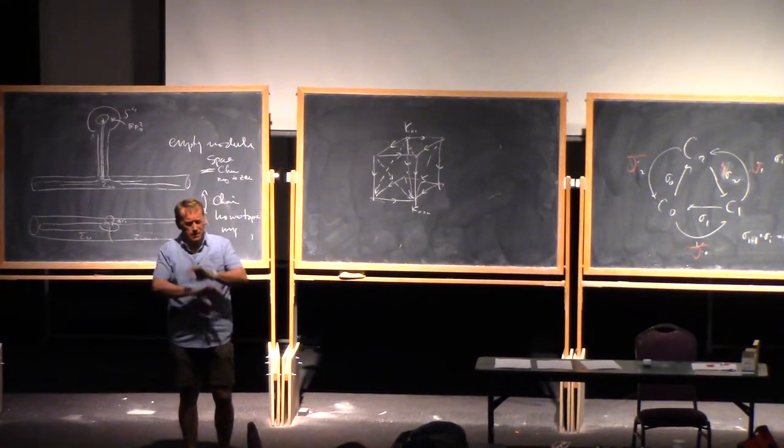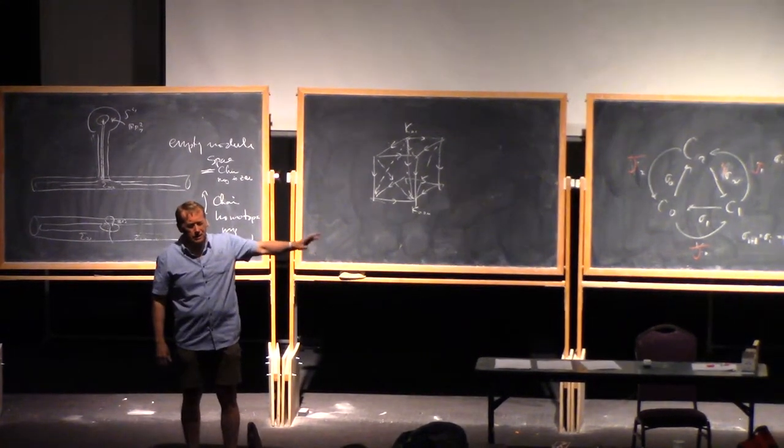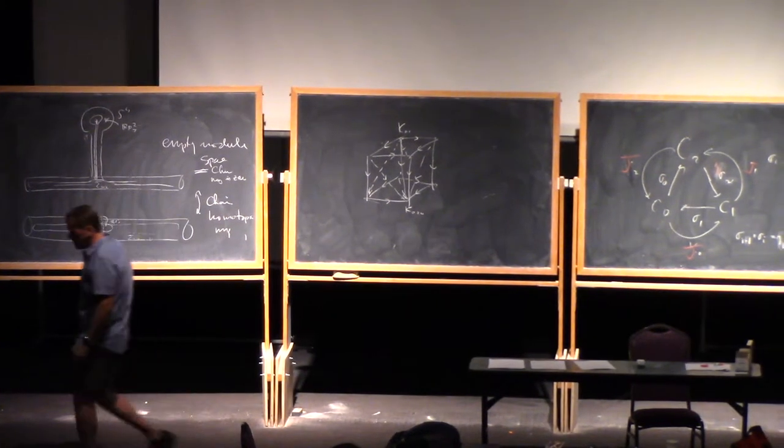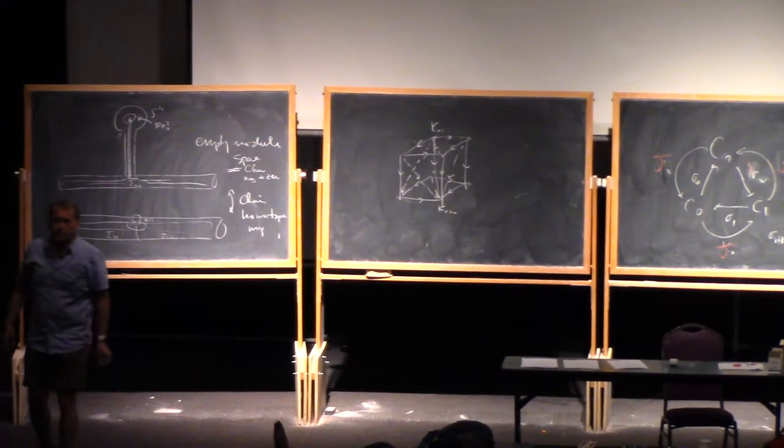Yeah, I see what you're saying. Think of the Klein bottle as an annulus connect sum RP2. So it connects some of the torus, yes, okay.